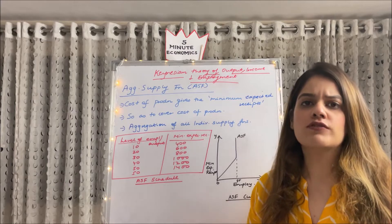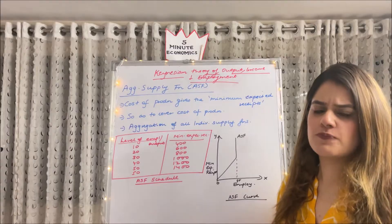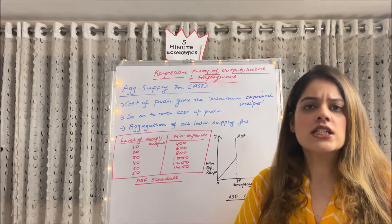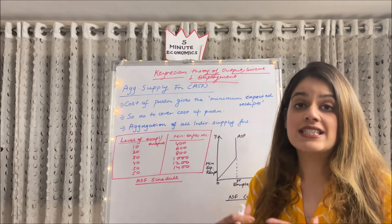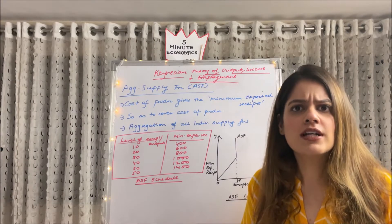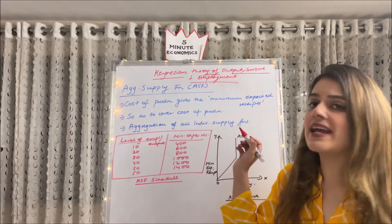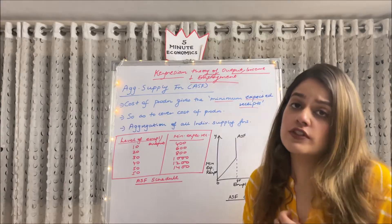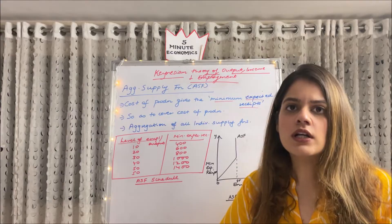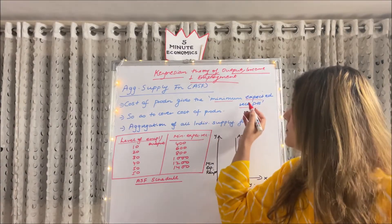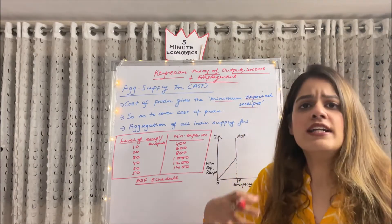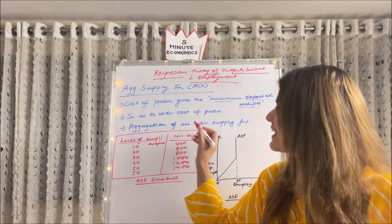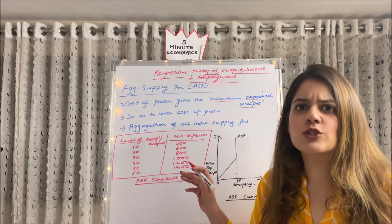Moving to the first important function: the aggregate supply function, commonly known as ASF. Any producer incurs some cost of production — variable cost, fixed cost — when producing a good. When selling that product, he will expect a minimum amount to cover those costs. So the cost of production gives us the minimum expected receipts, which is a key term under ASF. Any rational producer would like to cover at least the cost of production — if production cost is 500, the minimum expected receipt is 500.